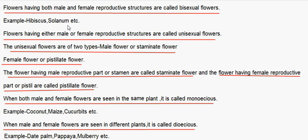Examples of bisexual flowers include hibiscus and solanum. Flowers having either male or female reproductive structures are called unisexual flowers. Unisexual flowers are of two types: staminate flowers, which have the male reproductive part or stamen, and pistillate flowers, which have the female reproductive part or pistil.